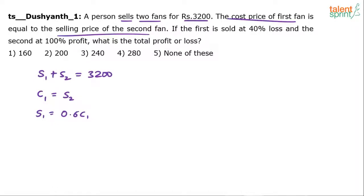The second fan was sold at 100% profit, meaning S2 equals 2 times C2. Understanding how to write S in terms of C when profit or loss is given is very, very important.